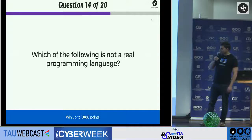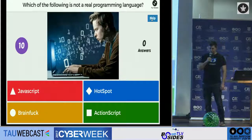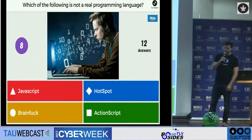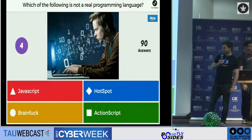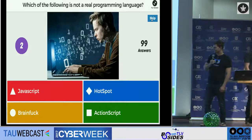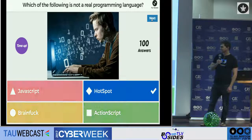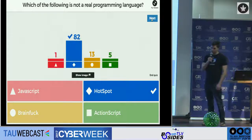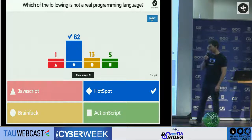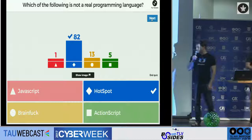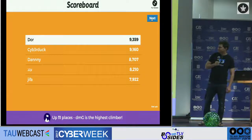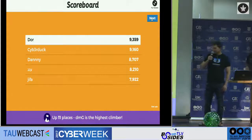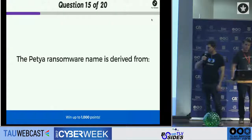Which of the following is not a real programming language? Hint: it's JavaScript. The answer is Hotspot — there isn't such a programming language in existence. Very nice. Gannet Galilee falls to fourth place.